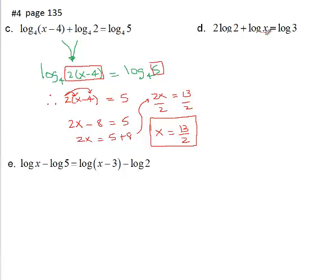Let's have a look here. Again, I want to make a single log on this side. I have two logs. I have to go to a single log first. However, this time you'll notice there's an exponent that needs to be moved first. Our coefficient moves up as an exponent. It's log two squared plus log x equals log three.